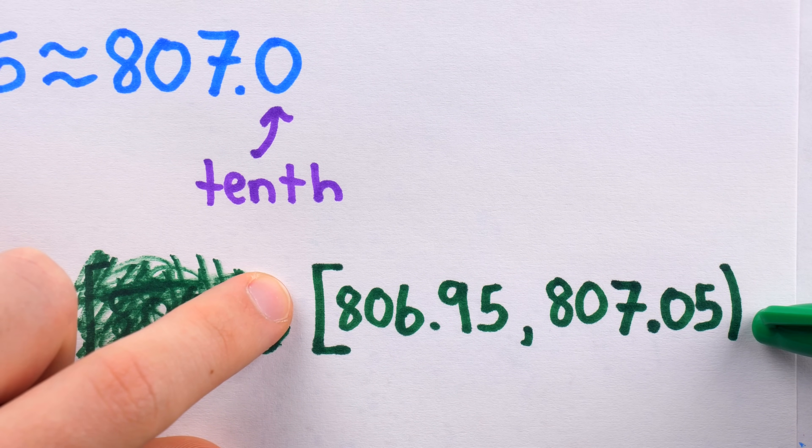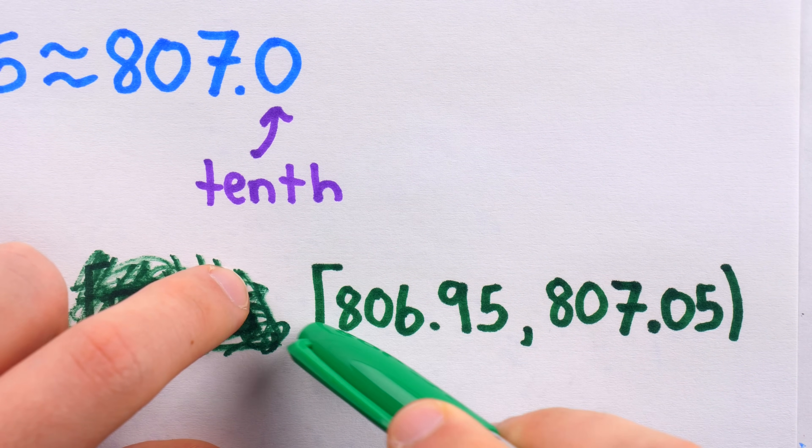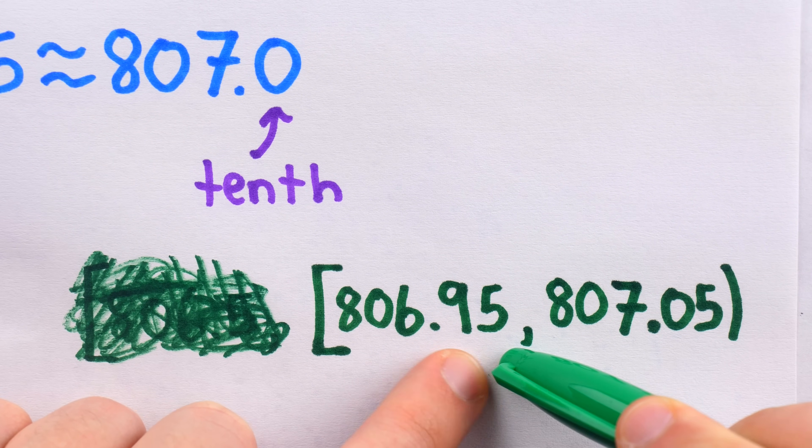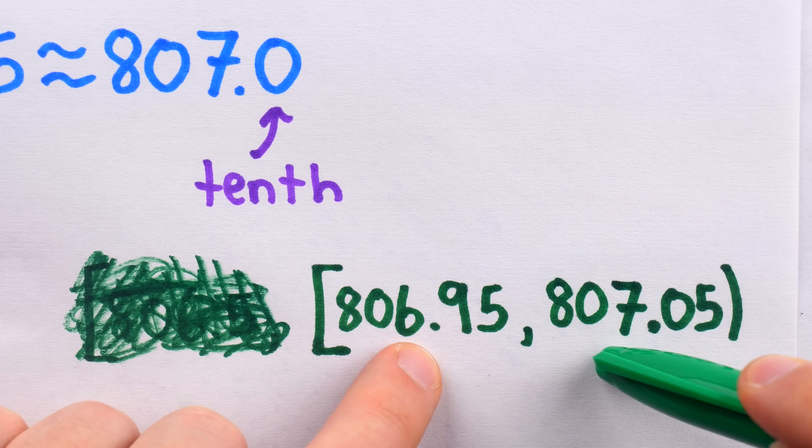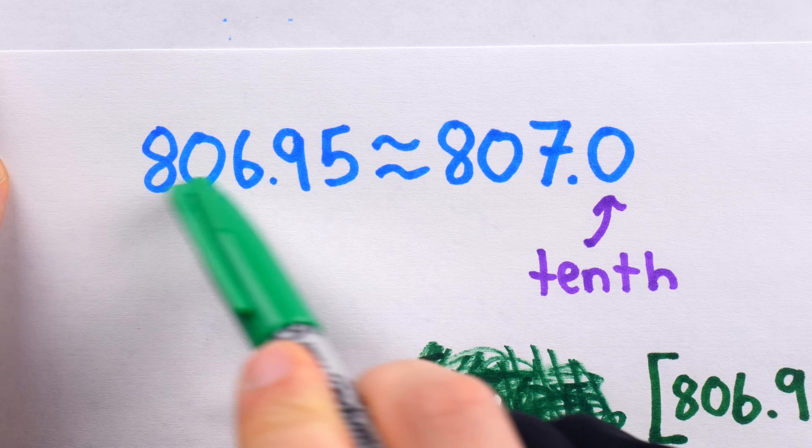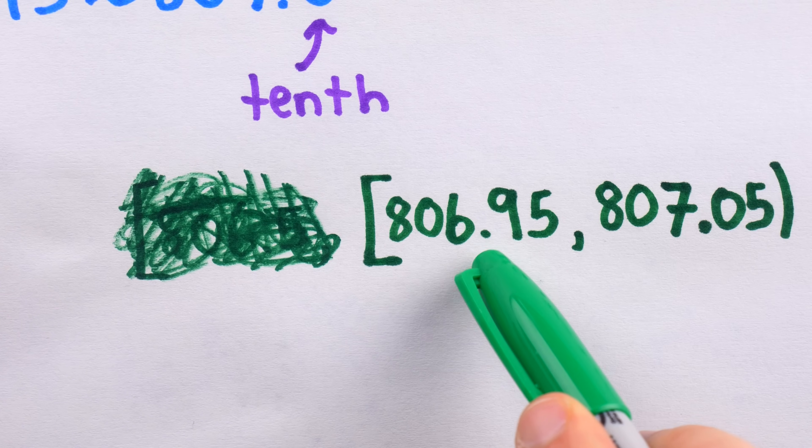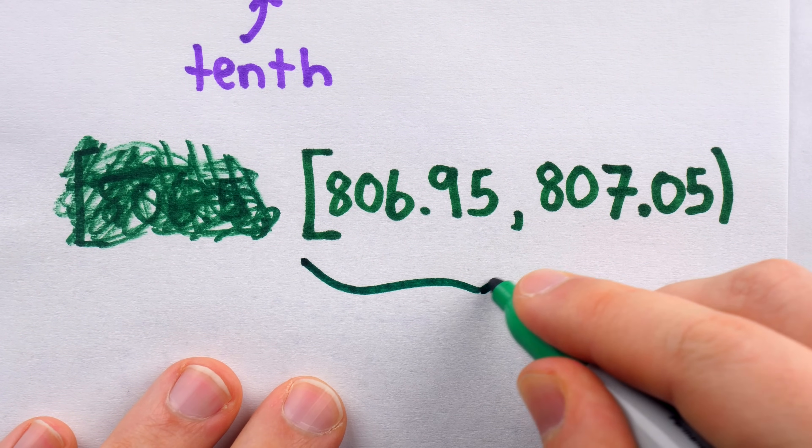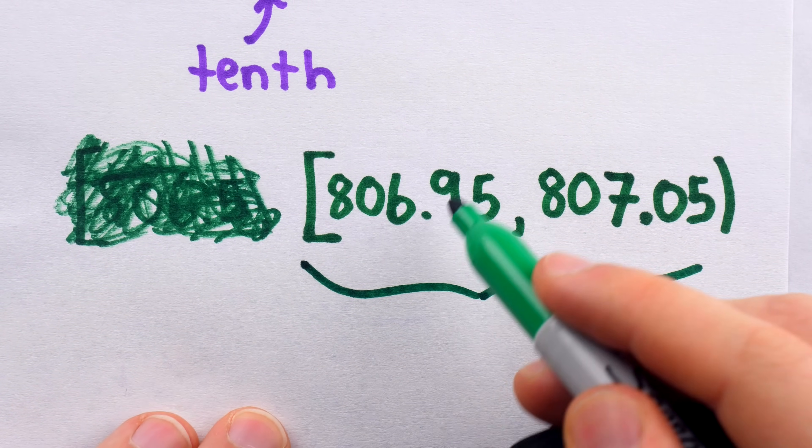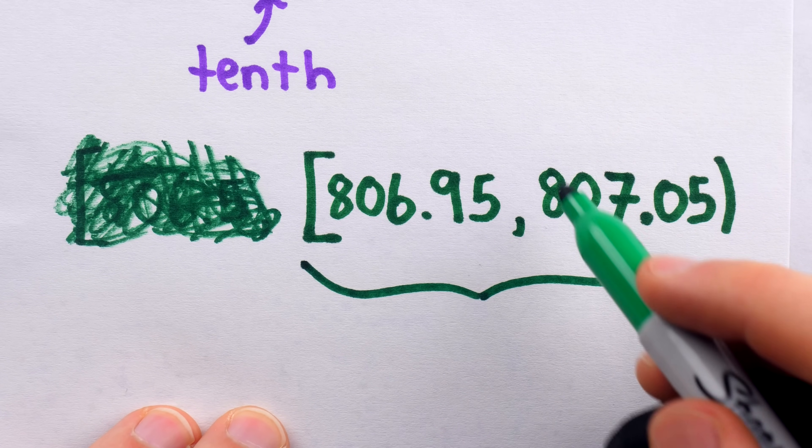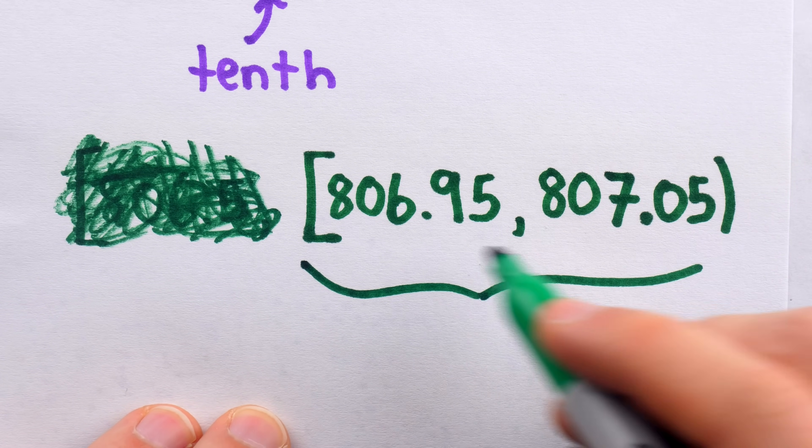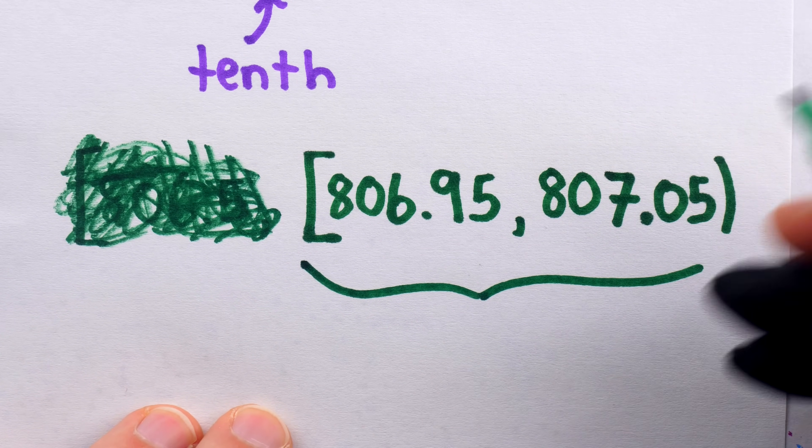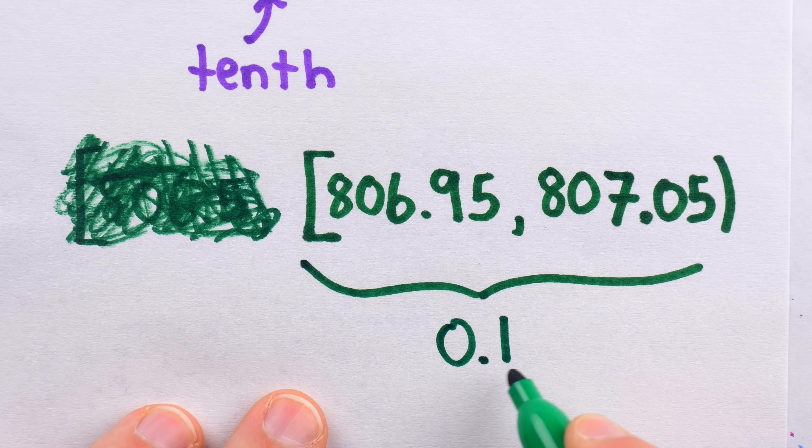If we rounded this to the nearest tenth, then we would get 807. And the number also could have been as big as 807.05. If it was actually this number, then we'd round it up to 807.1, but if it was anything smaller, then indeed it would be rounded to 807.0. By the way, this notation I'm using indicates that this number is included because of the square bracket, whereas this one isn't because of the parenthesis. So the original number could have been anything in this interval. And of course, this interval does contain the actual original number of 806.95.